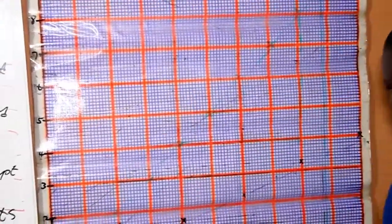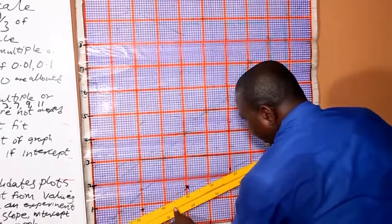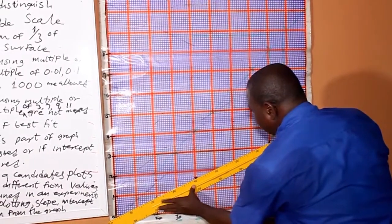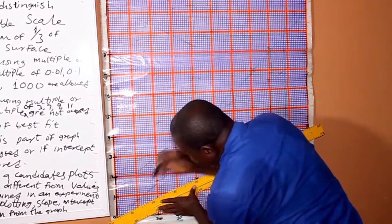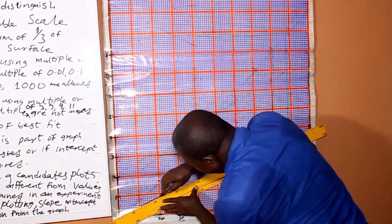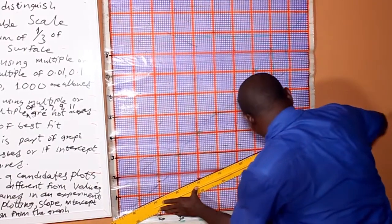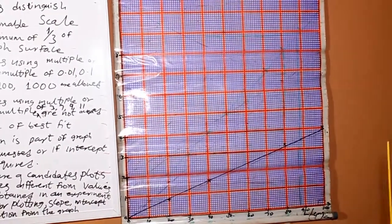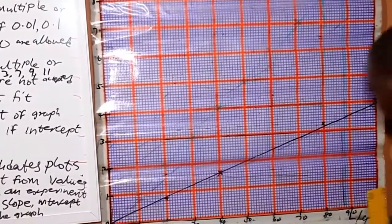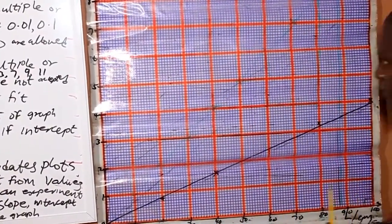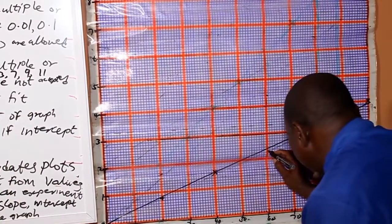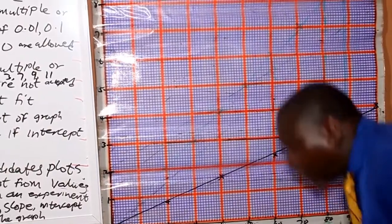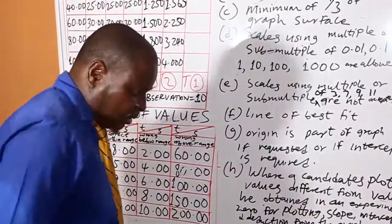Then, you join it together with a long ruler. That is your graph. That is your graph.